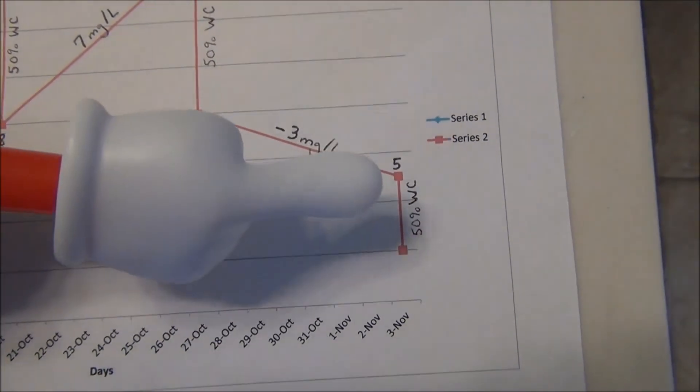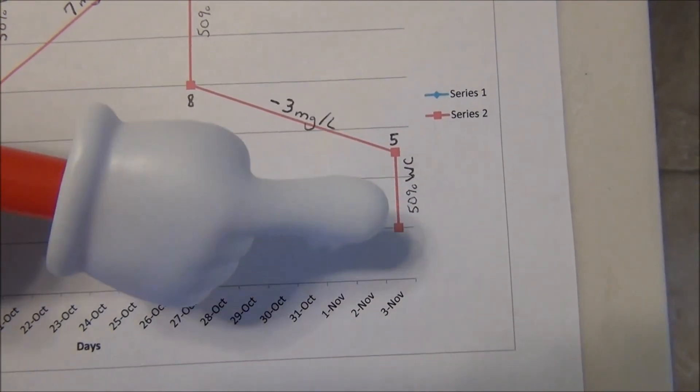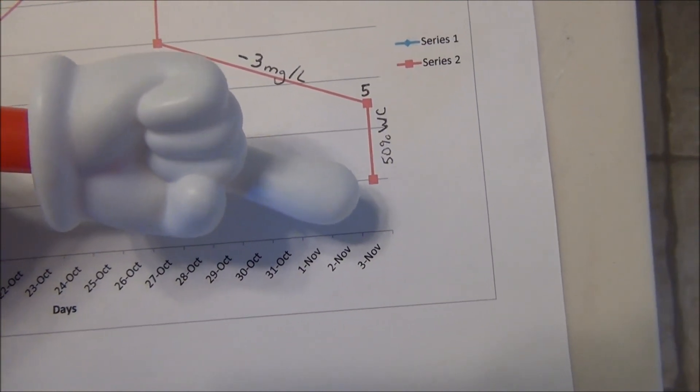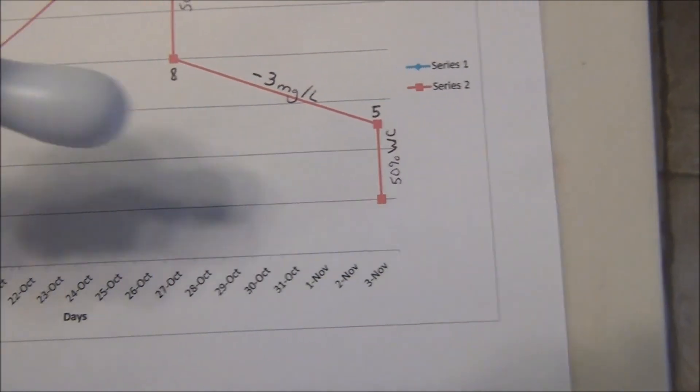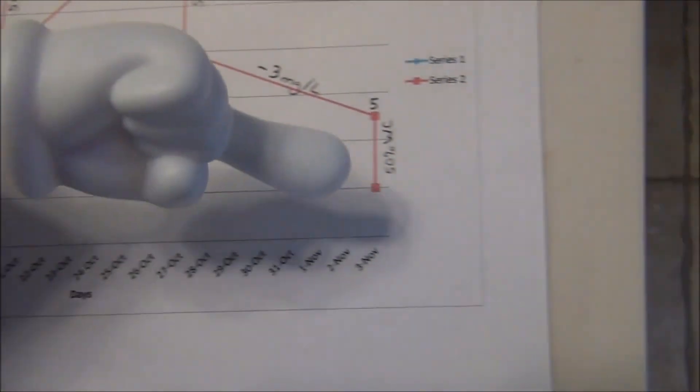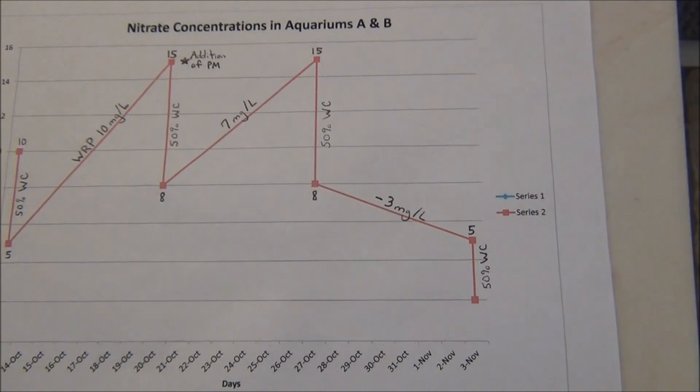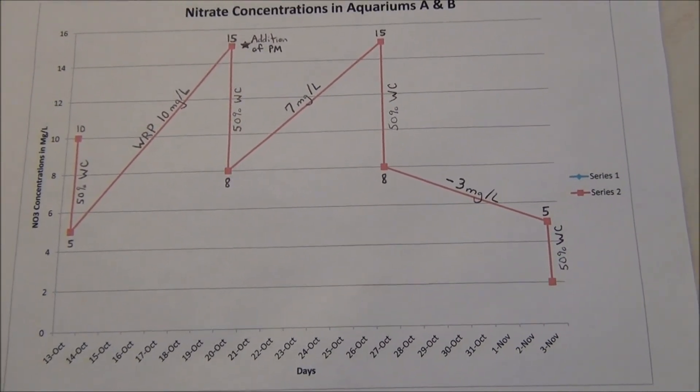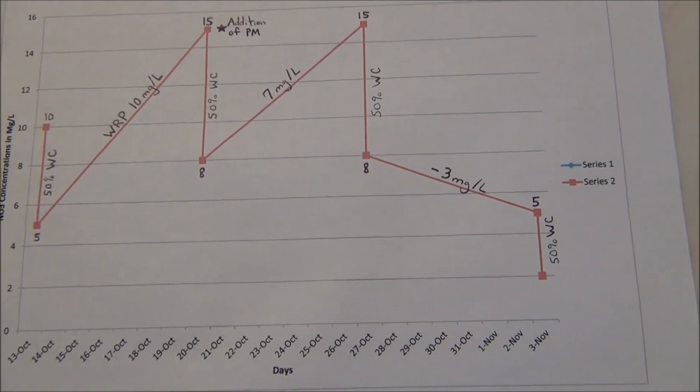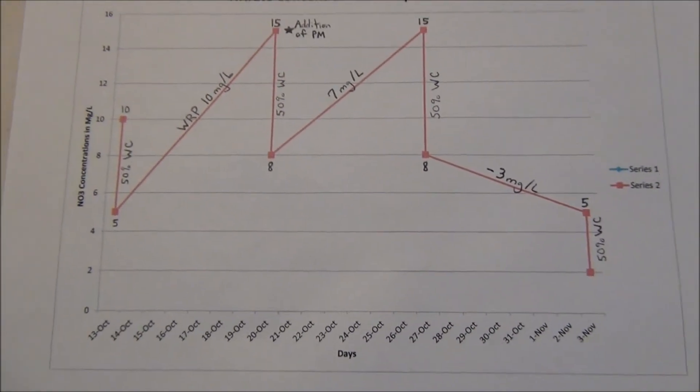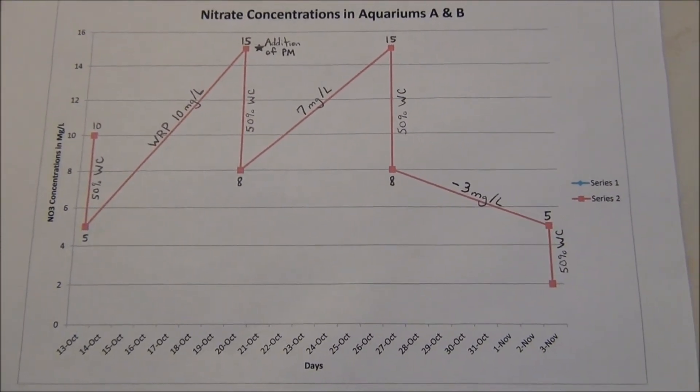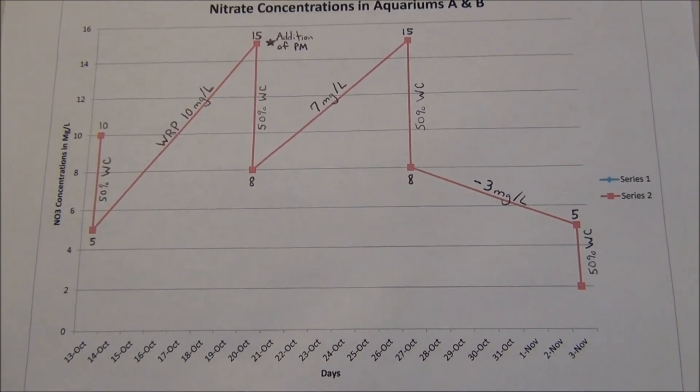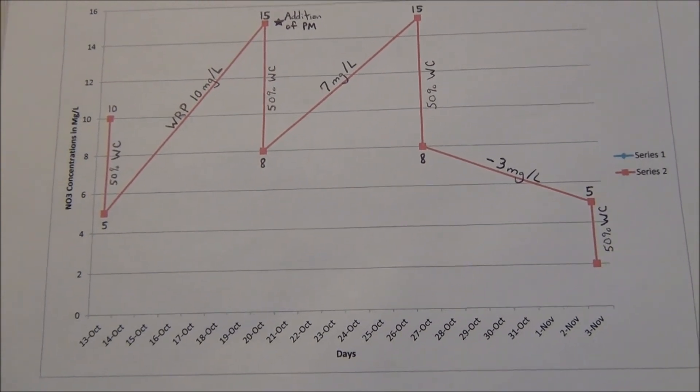We conducted another 50% water change today, and the final concentrations, which I just showed you, is 2 milligrams per liter. His experiment is due on Wednesday, but I think it's safe to conclude that by next Sunday, the nitrate concentrations should be zero. I'm going to go ahead and do another nitrate test next Sunday just to validate that theory.